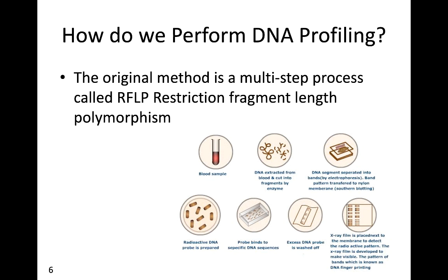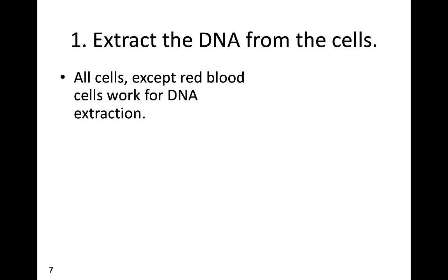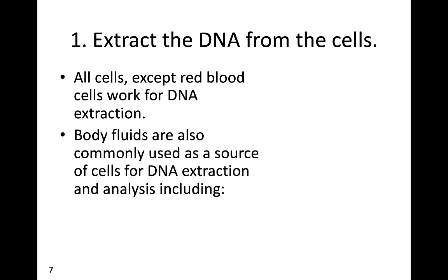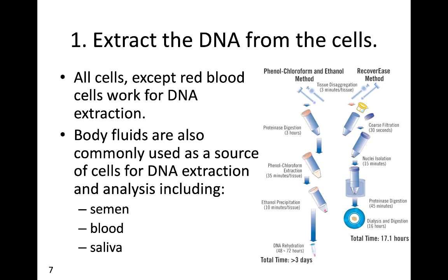We start with a blood sample, a cheek swab, or some other sample of organic material that's going to hold DNA. We extract DNA from there and take it through multiple steps. Step one: get the DNA out of the cells. All cells except for red blood cells and hair work for DNA extraction. Body fluids are also commonly used — semen, blood, saliva, they all work. In every case, we add some kind of chemical which will dissolve the rest of the cell but leave the DNA by itself. The Recoveriease method takes about 17 hours; the phenol-chloroform and ethanol method takes around three days.